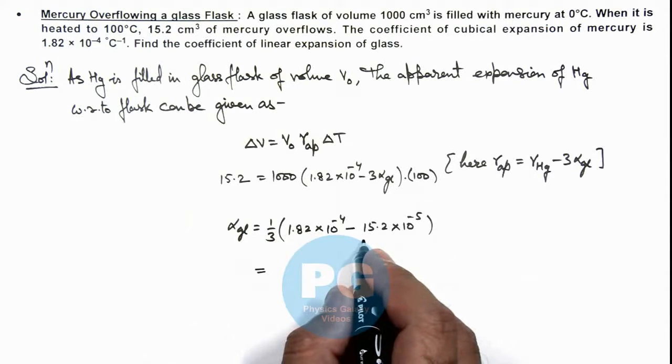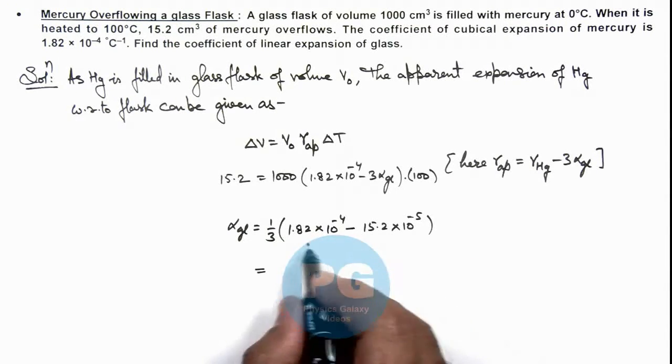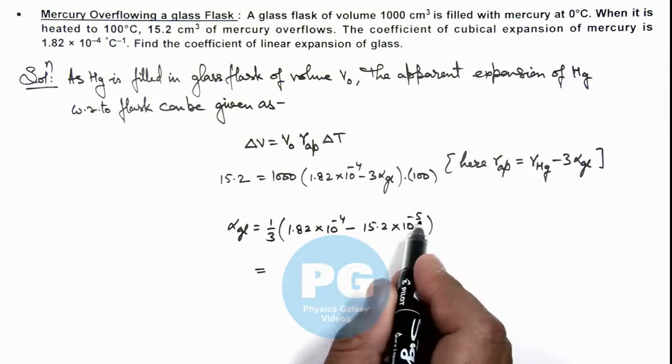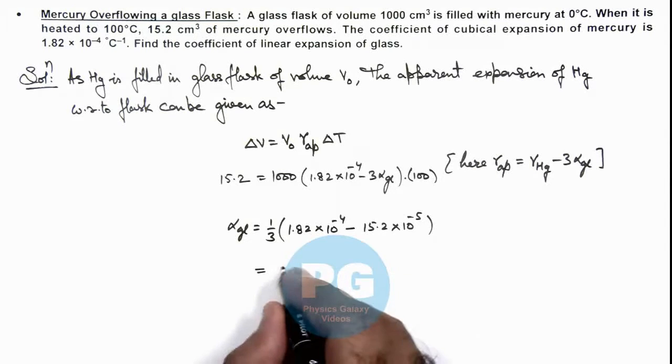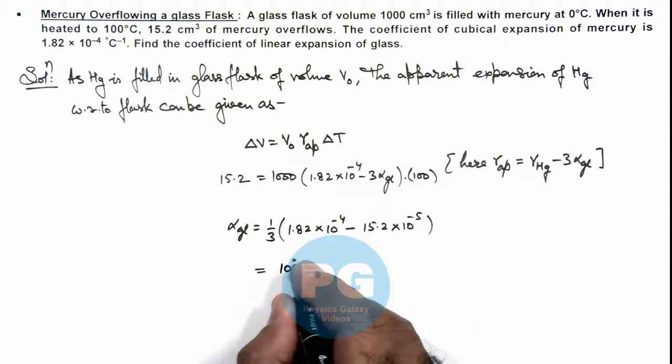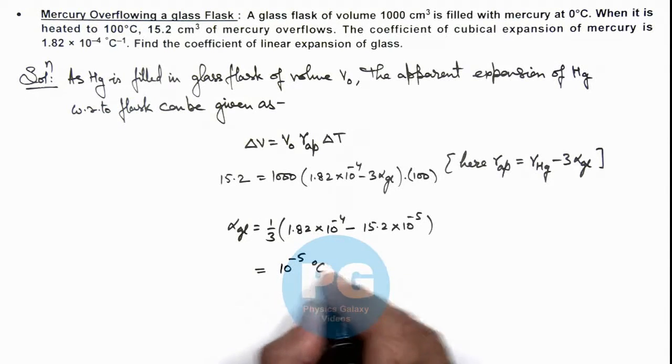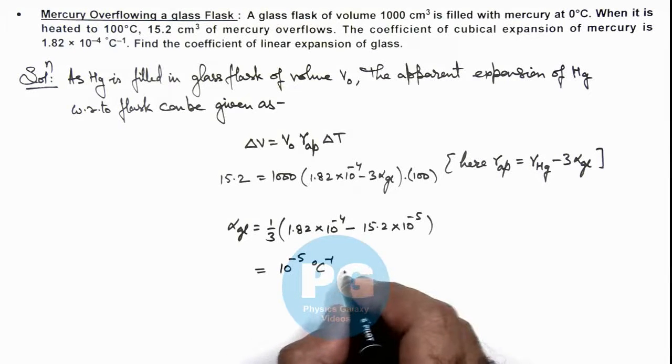You can see we are getting the result: this is 18.2 - 15.2 × 10⁻⁵, the 3 gets cancelled out, and the result is 10 × 10⁻⁵ per degree centigrade inverse. And this is the result of this problem.